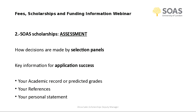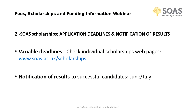Scholarship information is published annually in November. Our deadlines are normally in January and February, however some scholarships close on different dates. To avoid missing key deadlines, it is crucial that you check individual scholarship pages and note the closing dates in your calendar. In order to be eligible for a SOAS scholarship, you must also apply for your program of study ideally six weeks before the deadline. Successful candidates will be notified of the outcome of their application by July.